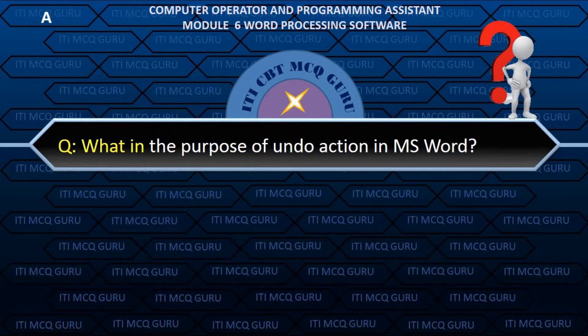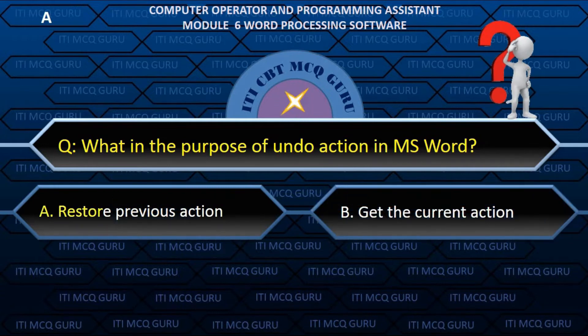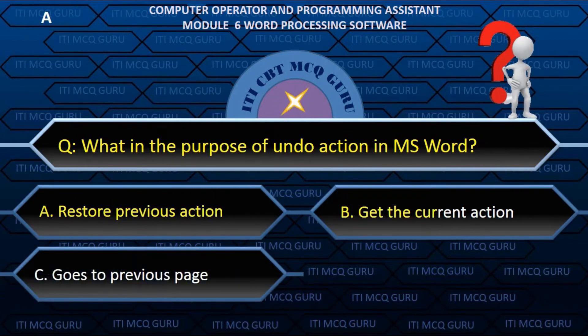What is the purpose of the undo action in MS Word? A. Restore previous action.